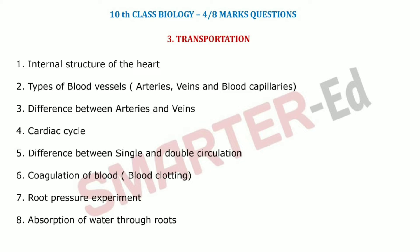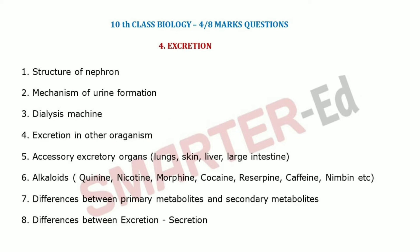The sixth question is coagulation of blood — how blood clotting takes place in the body. Next is the root pressure experiment, and the eighth question is absorption of water through the roots. Moving to excretion: the first question is the structure of the nephron, including the Malpighian body and renal tubule.